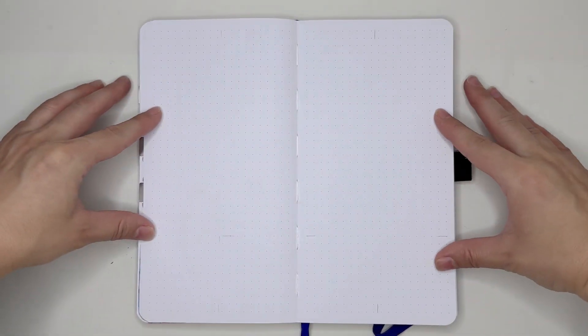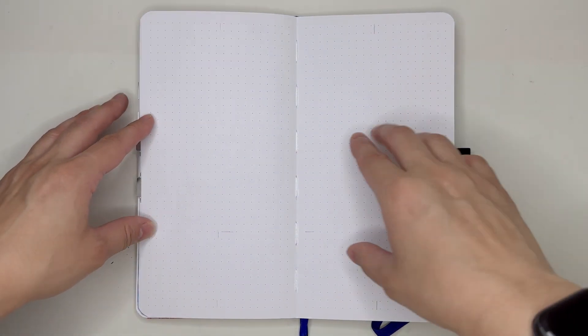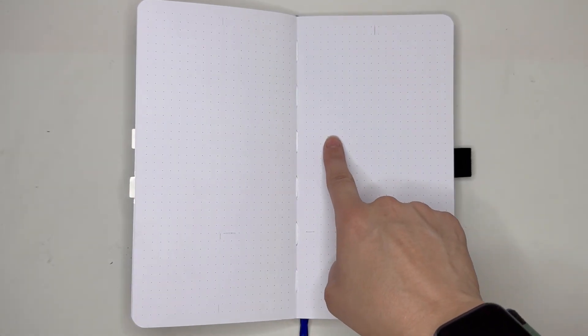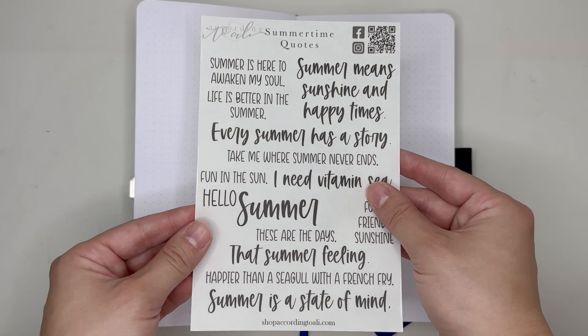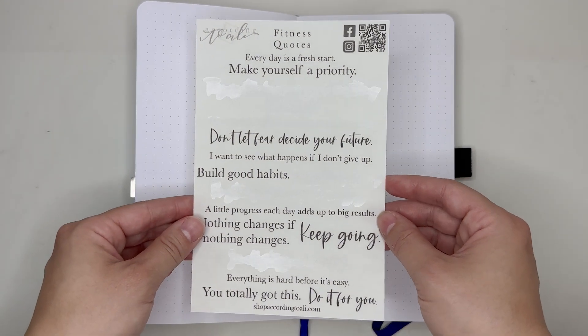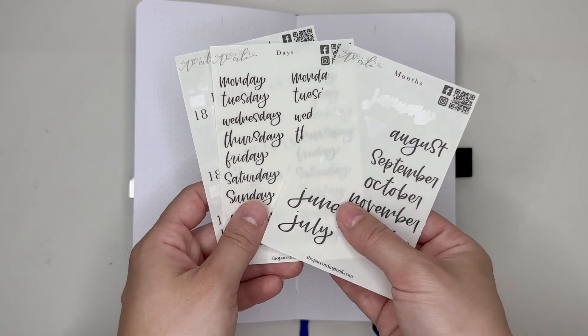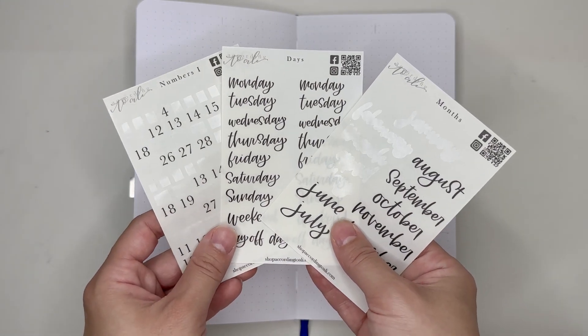Here we are in my traveler's notebook size planner. I'm going to be going with a vertical layout for this week's spread. I'll be using these rainbow alcohol ink stickers, this summertime quotes sheet, this fitness quote sheet, and three mini sheets with the months, days, and numbers. All of these sticker sheets are from According to Ally.